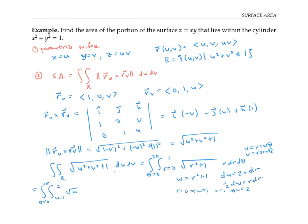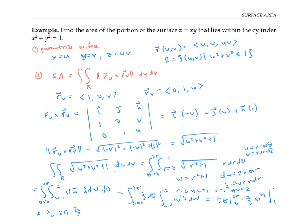Converting the integral, I get the square root of w times one half dw d theta. Since the bounds of integration are constants, I can rewrite as the product of two integrals: the integral of one half d theta from 0 to 2π, and the integral of w to the one half dw from 1 to 2. Integrating gives one half times theta evaluated from 0 to 2π, times two thirds times w to the three halves evaluated from 1 to 2. Plugging in bounds: one half times 2π times two thirds times (2 to the three halves minus 1) equals one third π times (2 to the three halves minus 1) as the final surface area.